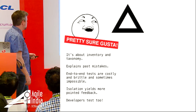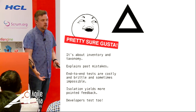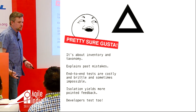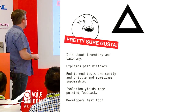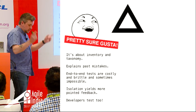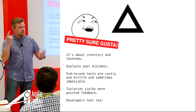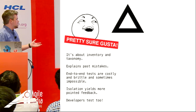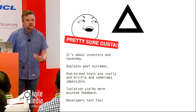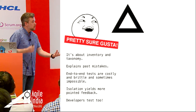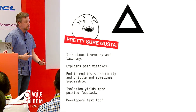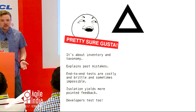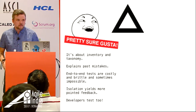Netflix's chaos engineering group doesn't do any end-to-end tests — they can't, it's a distributed system. They rely more on component tests and chaos engineering where they just shut down data centers. This model also explains past mistakes. When I first discovered Cucumber I thought it would solve all my problems, so I did a bunch of end-to-end tests and ended up with an inverted pyramid. Isolation yields more pointed feedback — unit tests, when something goes red, you know exactly what went wrong. Whereas an end-to-end test is more of an investigation.